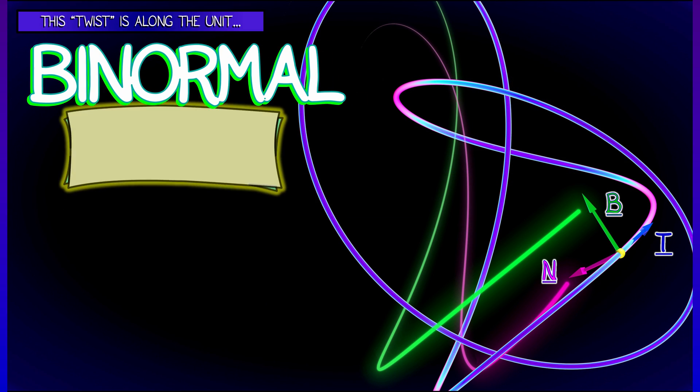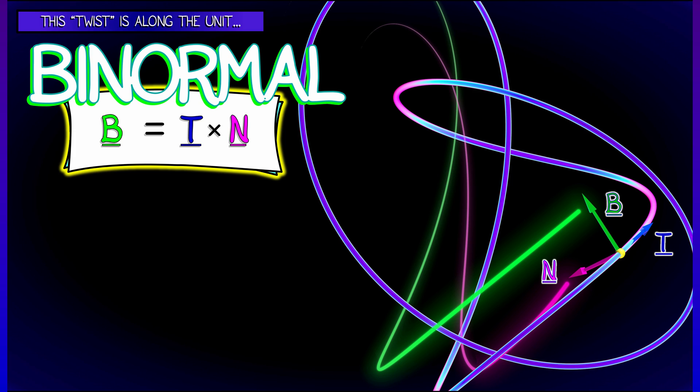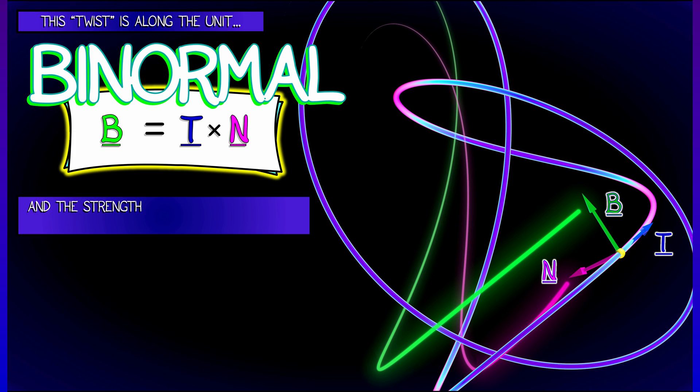Now what regulates that is something called the binormal vector. This is denoted B, and is defined to be the cross product of the unit tangent with the unit normal vector. This third vector gives a coordinate frame that is adapted to the curve.